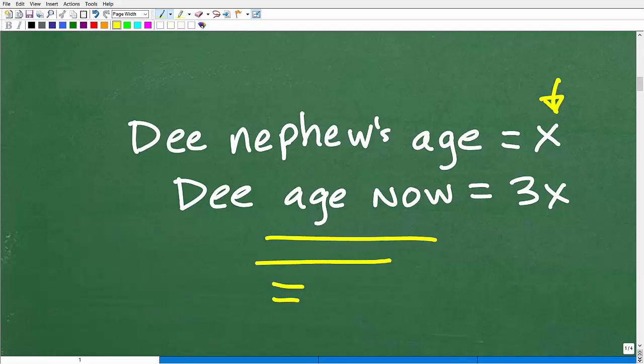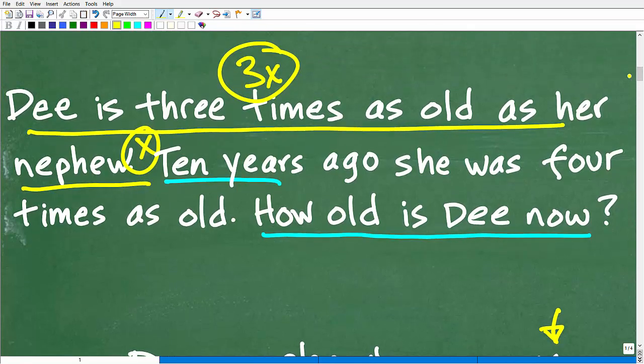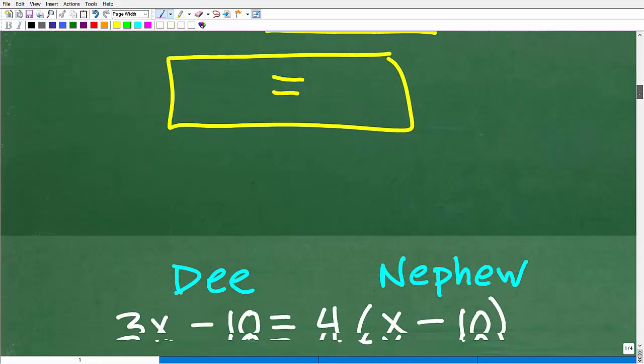Now that we have some variables assigned, we can't solve for this variable unless we build an equation, an algebraic equation. Most algebra word problems work pretty much the same way. We're going to have to use the rest of this information in the problem to build an equation. The information that we need to use is this part right here: Ten years ago, she was four times as old. Let's go ahead and build this equation right now with that information.